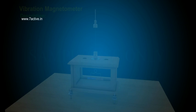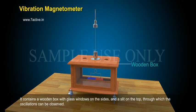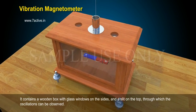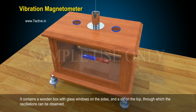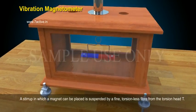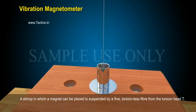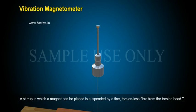Vibration Magnetometer. Description: It contains a wooden box with glass windows on the sides and a slit on the top through which the oscillations can be observed. A stirrup in which a magnet can be placed is suspended by a fine torsionless fiber from the torsion head T.